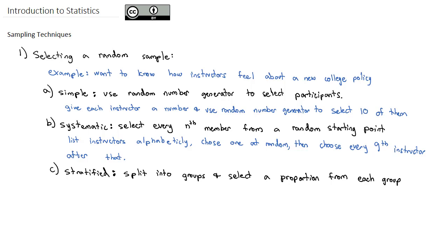So an example of stratified random sampling for our college policy and surveying our instructors is we could split the instructors into departments, those are our groups, and then we're going to choose one-fifth of each department. So that way each department is represented in our survey.